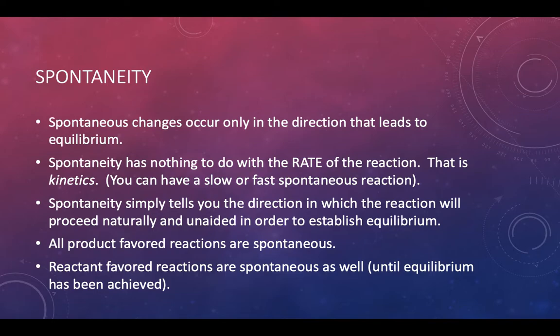If you have a product favored reaction, they're going to be spontaneous. If you have a big K value, you put a couple reactants together, it's going to head in that forward direction all on its own without any outside intervention from you. Reactant favored reactions can be spontaneous as well. It's just until equilibrium has been achieved. Once that equilibrium has been achieved, then it's no longer going to be that spontaneous in the reactant favored direction.